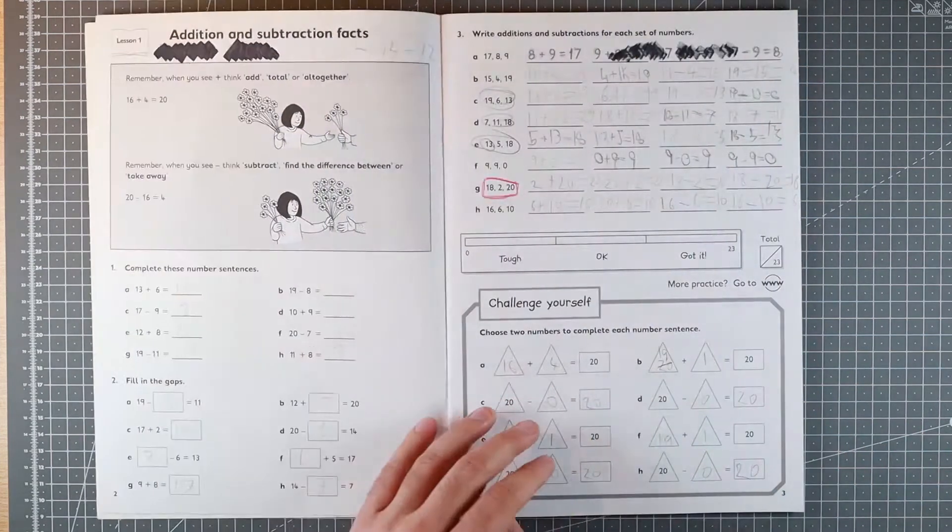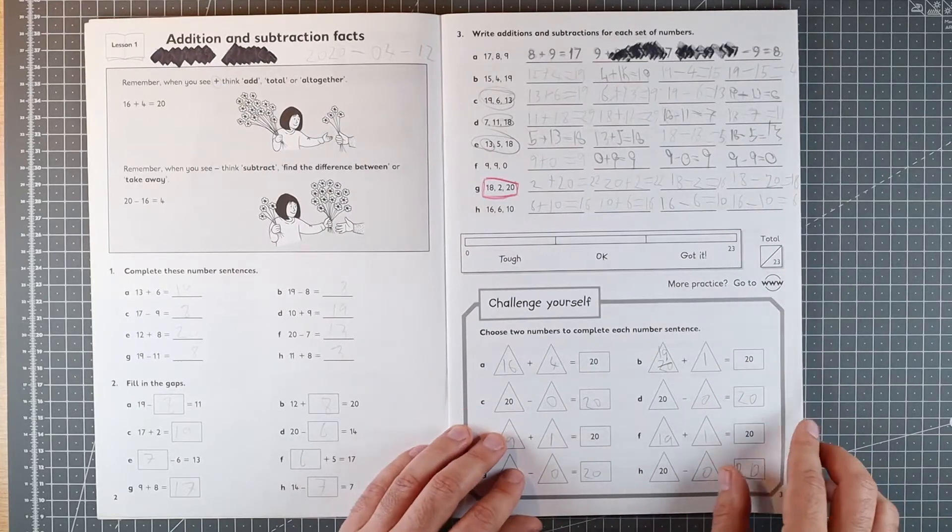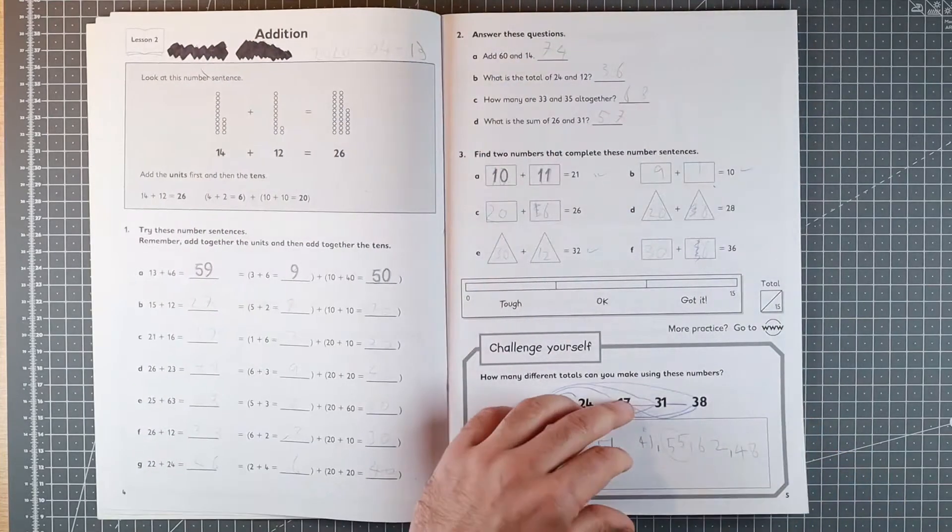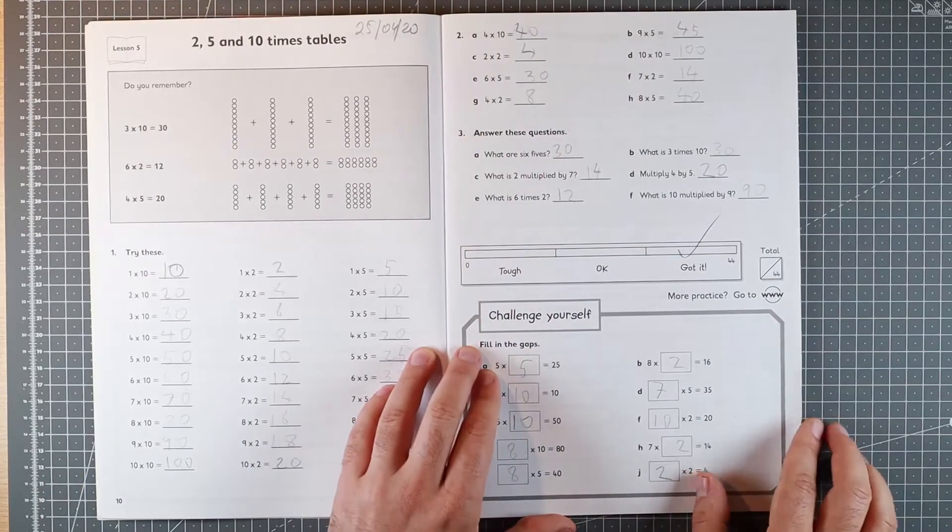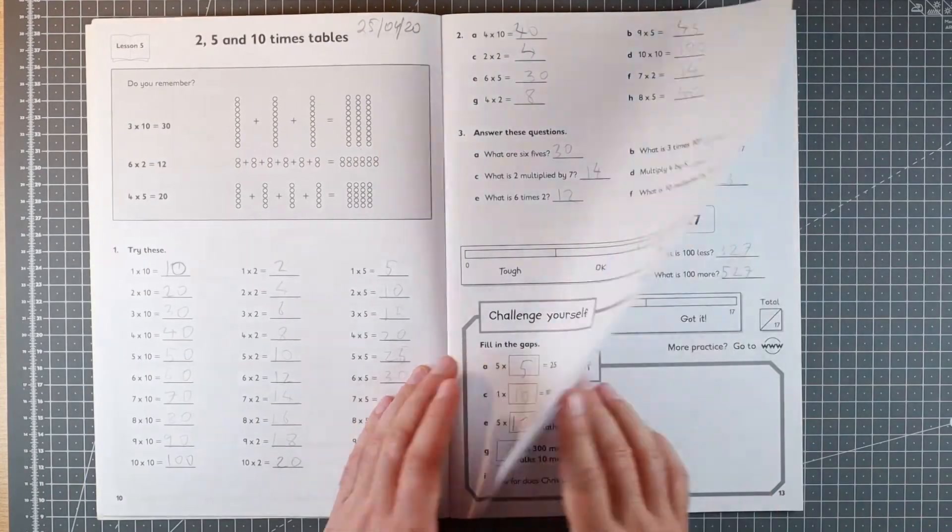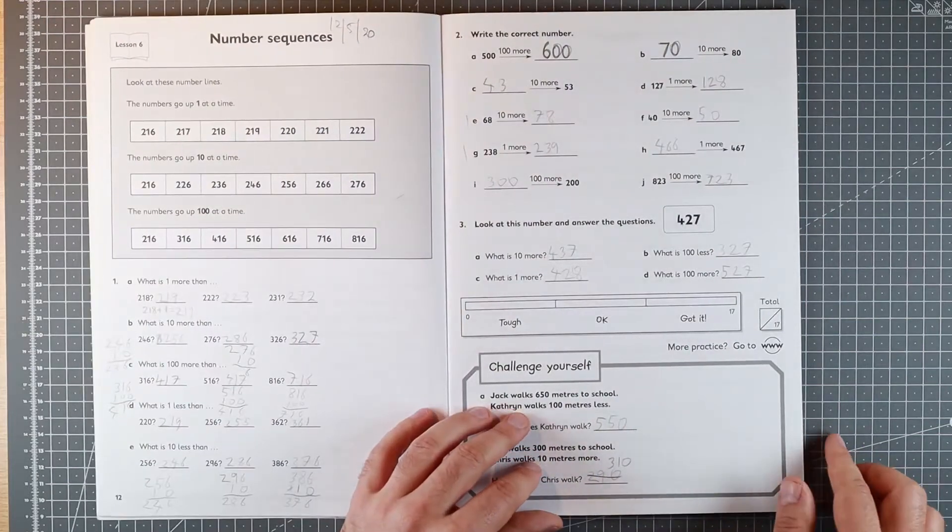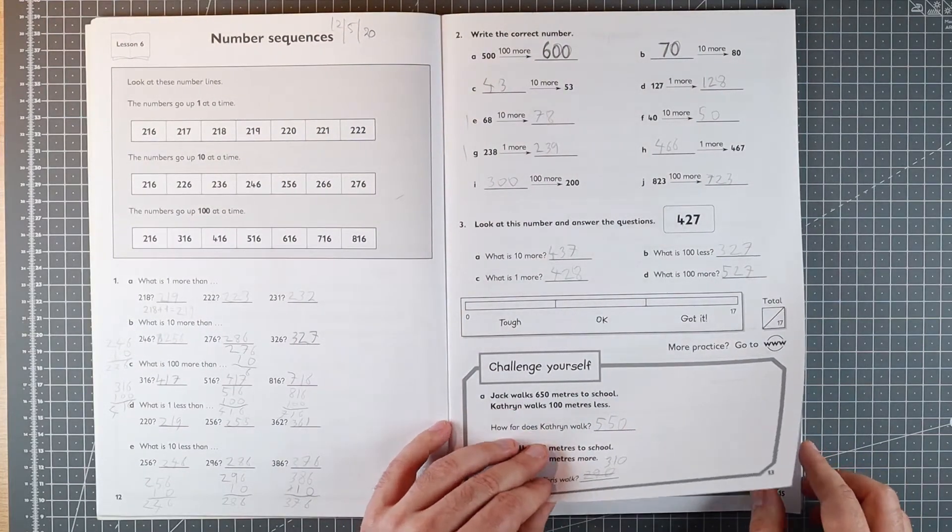It moves through the exercises quickly, keeps the kids on their toes. The structure of almost every other exercise is different, so they really need to read the instructions and answer properly, understanding what's being asked in the book.